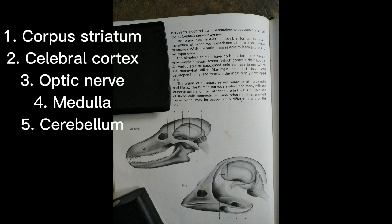Brain structure labels: 1. Corpus striatum, 2. Cerebral cortex, 3. Optic nerve, 4. Medulla, 5. Cerebellum.